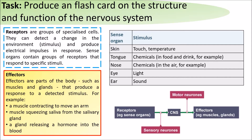The central nervous system is set up so that receptors in the sense organs send nerve impulses down sensory neurons towards the central nervous system, which then sends nerve impulses along motor neurons to effectors.